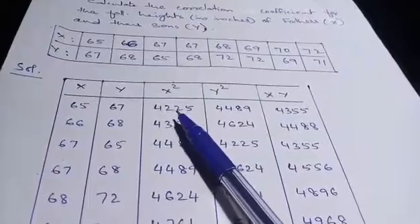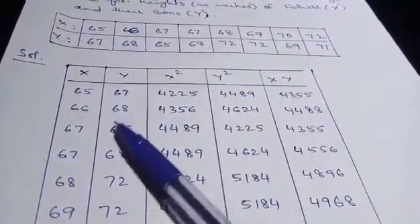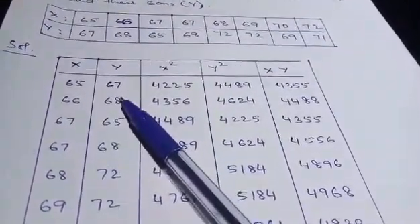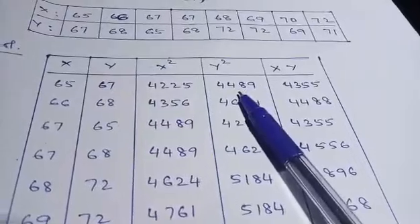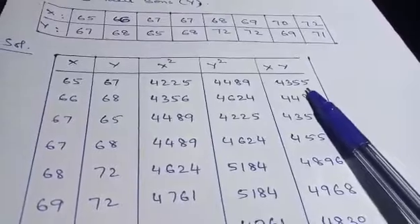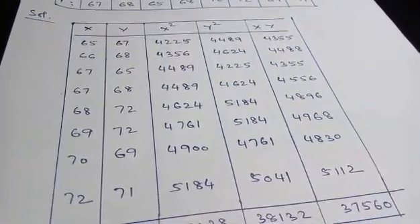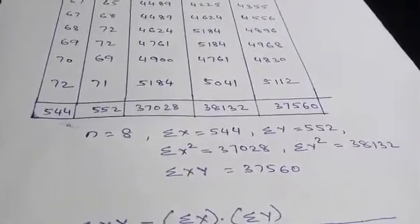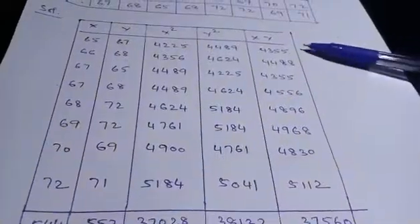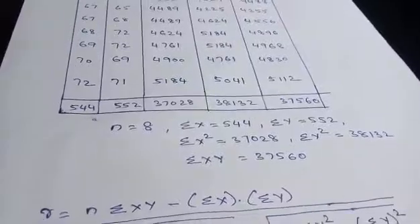For doing the calculation you need x square, y square and x y. So for 65, x square is 4225. For 67 as y, the value is 4489 and x into y, 65 into 67, is 4355. Find the corresponding values for all and then find the sigma values. Now n is equal to 8. N means the total values, that is 1, 2, 3, 4, 5, 6, 7, 8. So n is equal to 8, write down all the values.